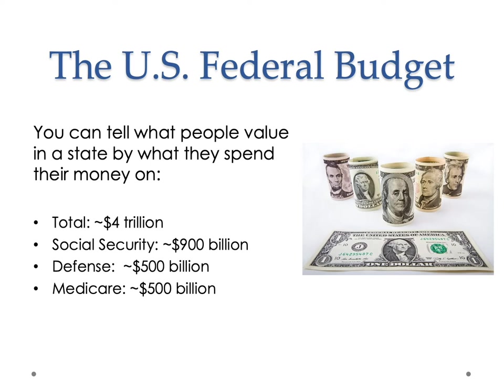Huge portions of our federal budget basically extract taxes from people who are currently working and distribute them to people who have stopped working, and provide health care to people who are no longer working in general. So one of the things that states do is distribute resources to people who tend to be at risk — older people are at risk of poverty and of being sick. States engage in a process of socialization of that risk, where younger people pay to help older people. Most states are predicated on this basic idea of extracting taxes from one group and distributing them to another.